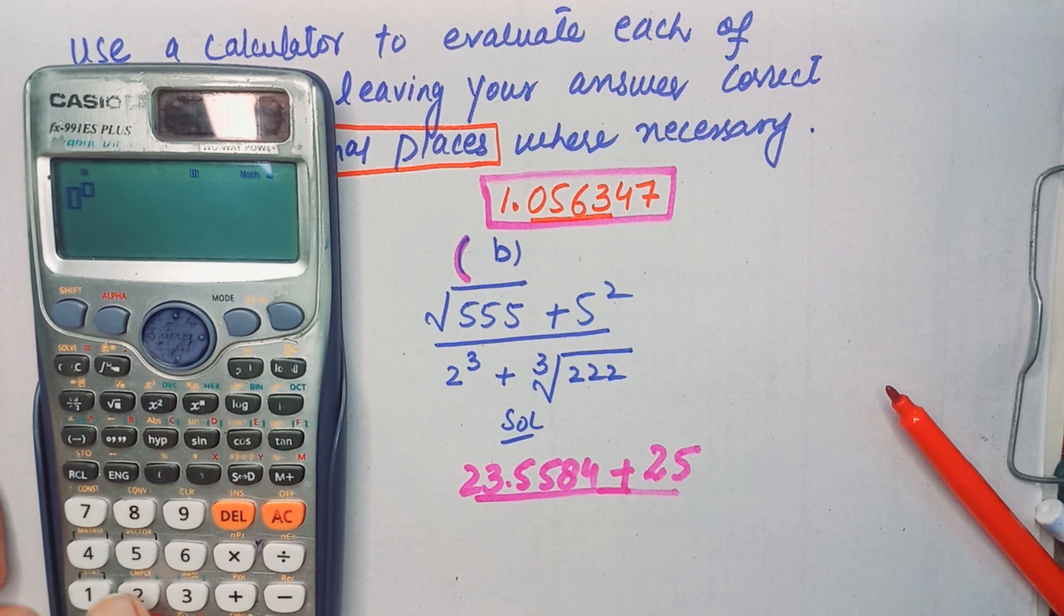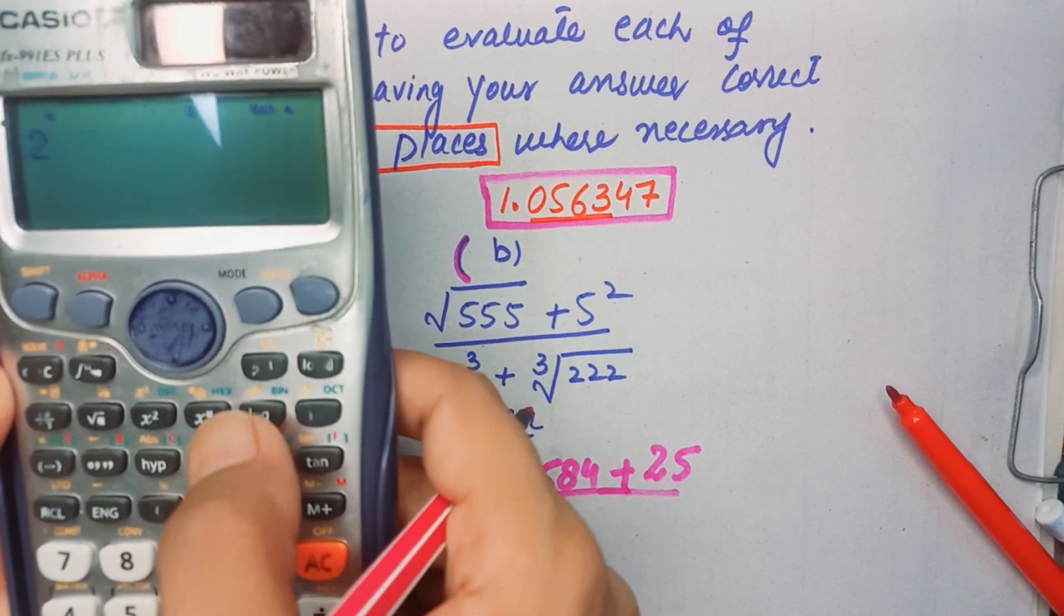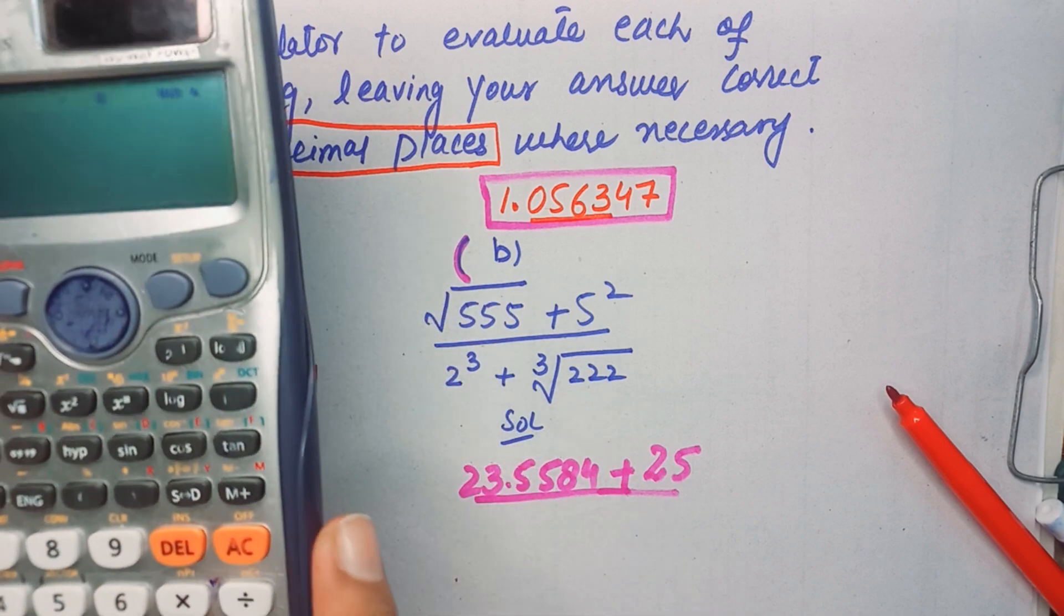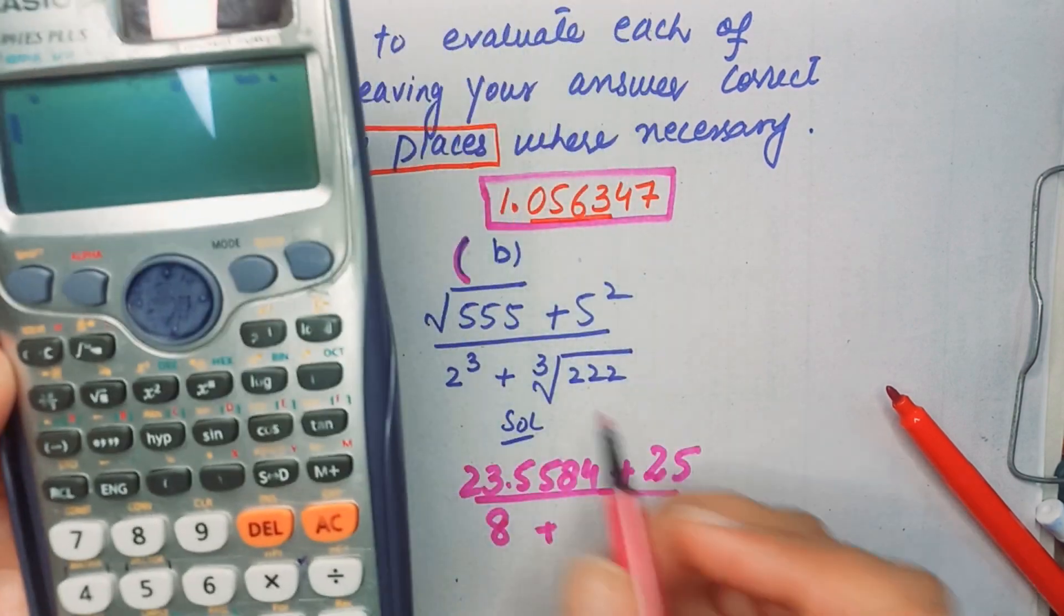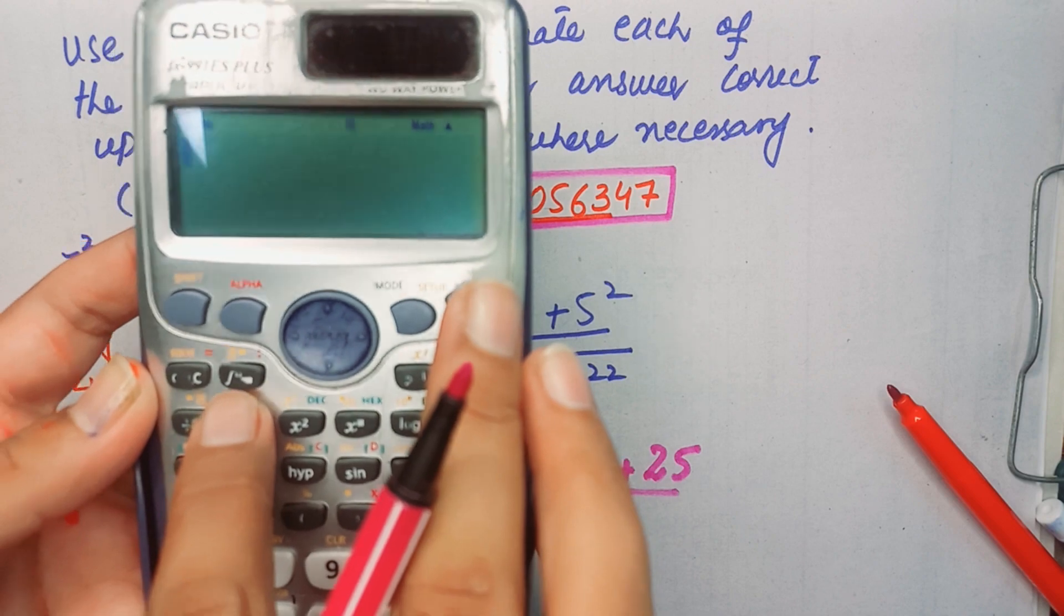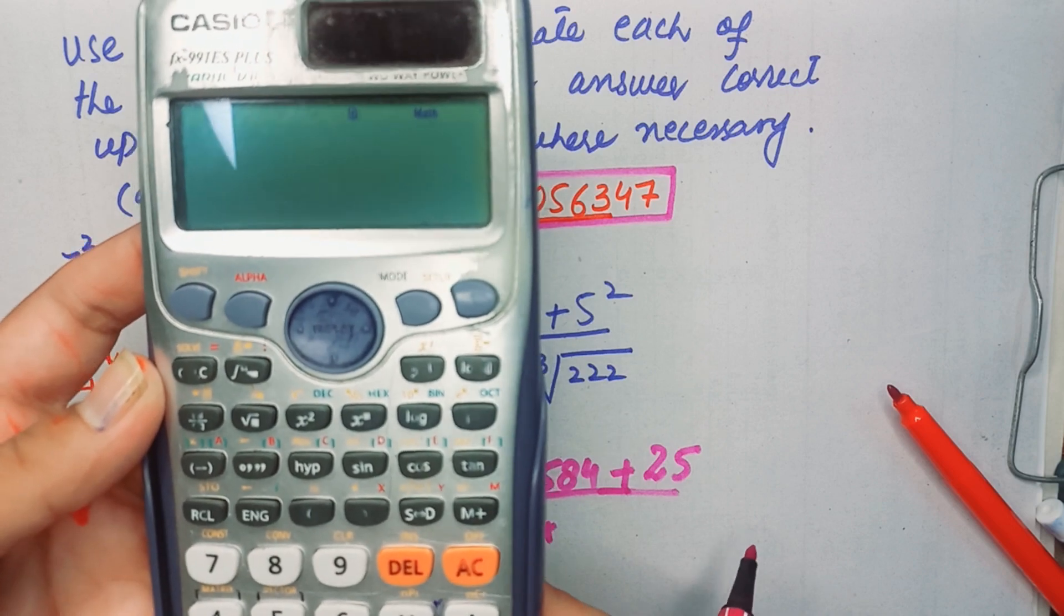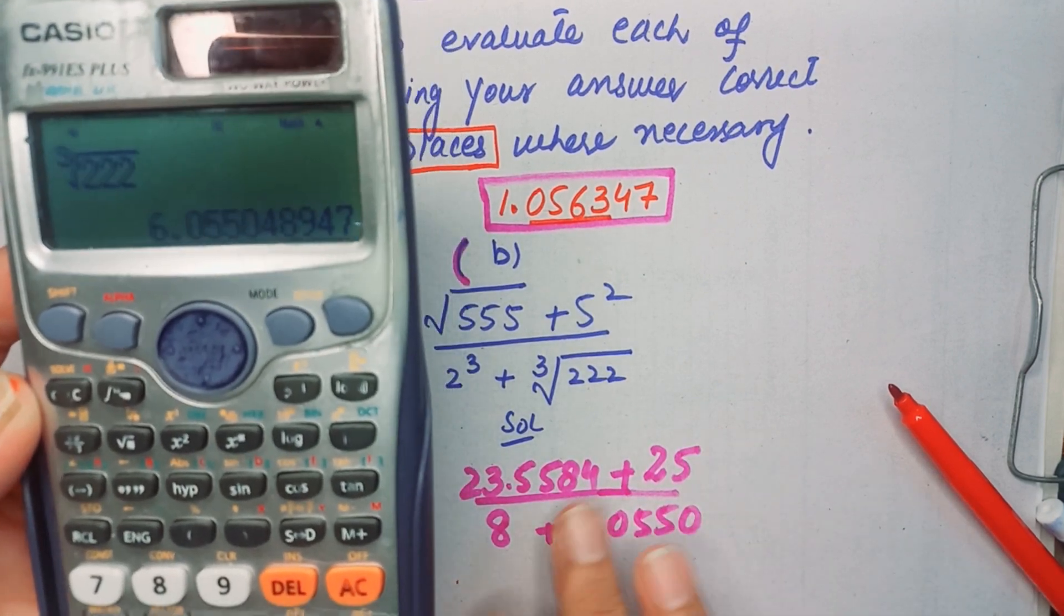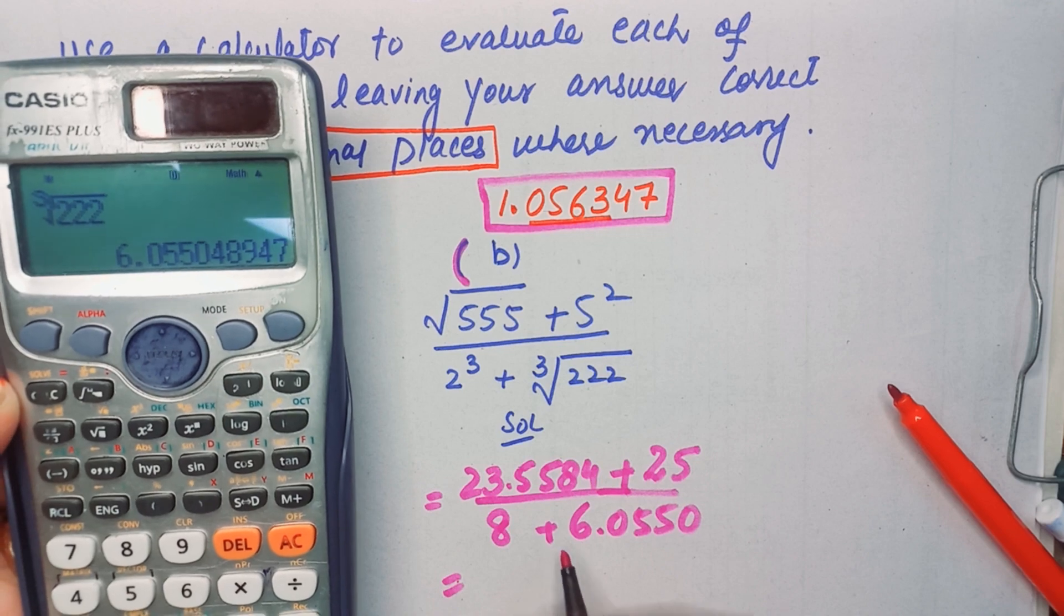Now 2 cube. We will press the cube button. In some calculators, you can press 2 and then the cube button to get the answer, but here you have to first select the cube button and then write 2 cube, so it will be 8. Now student, cube root of 222. We will press the cube root button, it's always with the shift in all calculators, and then we will write 222. The answer we are getting is 6.0550. We will just consider the 4 digits.